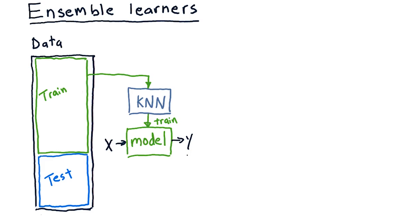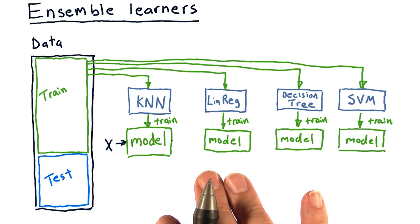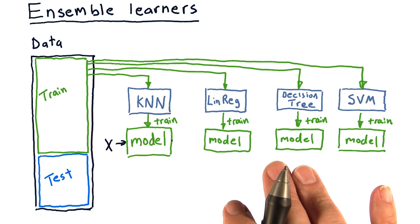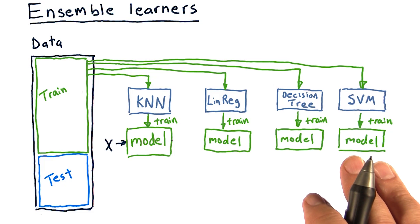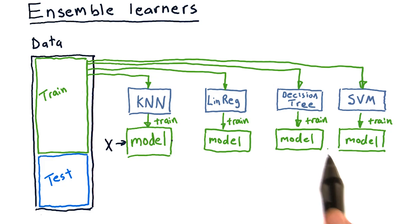The idea with ensemble learners is that we have several additional learners. We might have a linear regression based model, a decision tree based model, a support vector machine based model. You could continue this on with any different number of algorithms. They're all trained using the same data, and so now we have, in this case, four different models.